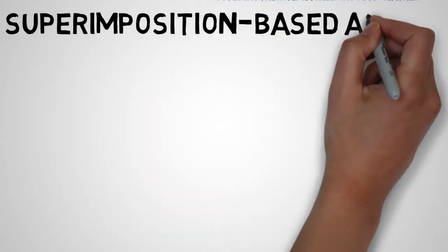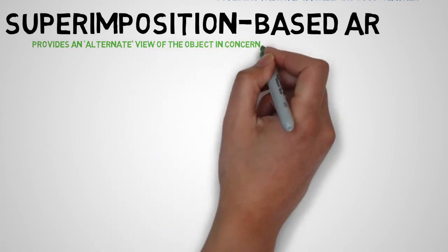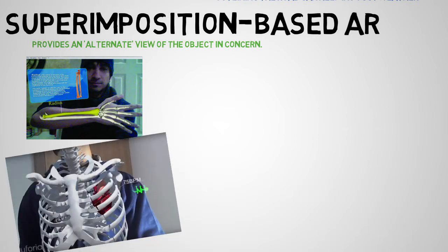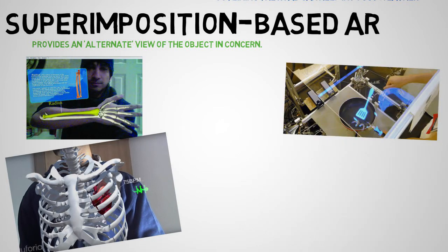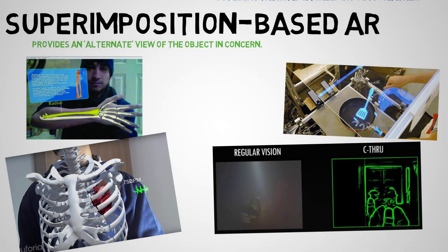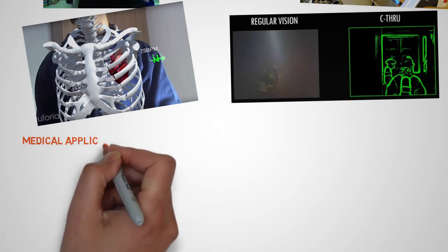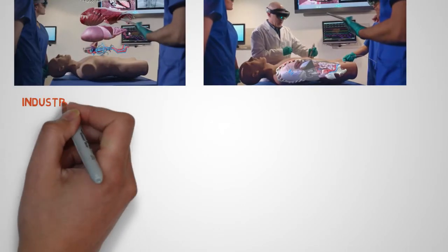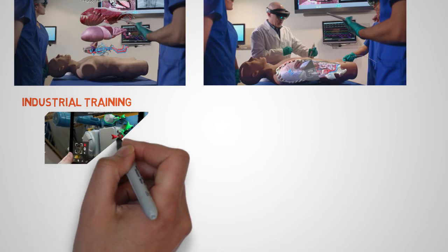Superimposition-based augmented reality provides an alternate view of the object in concern, either by replacing the entire view with an augmented view of the object or by replacing a portion of the object view with the augmented view. Object recognition plays a vital role here — if the application does not know what it is looking at, it cannot replace the original view with an augmented one. Thermal vision can be thought of as superimposition augmented reality, as it takes heat signatures using an infrared camera and overlays them onto a visual image for clarity. It can also be used for medical purposes to gain deeper insight into health conditions of a patient.